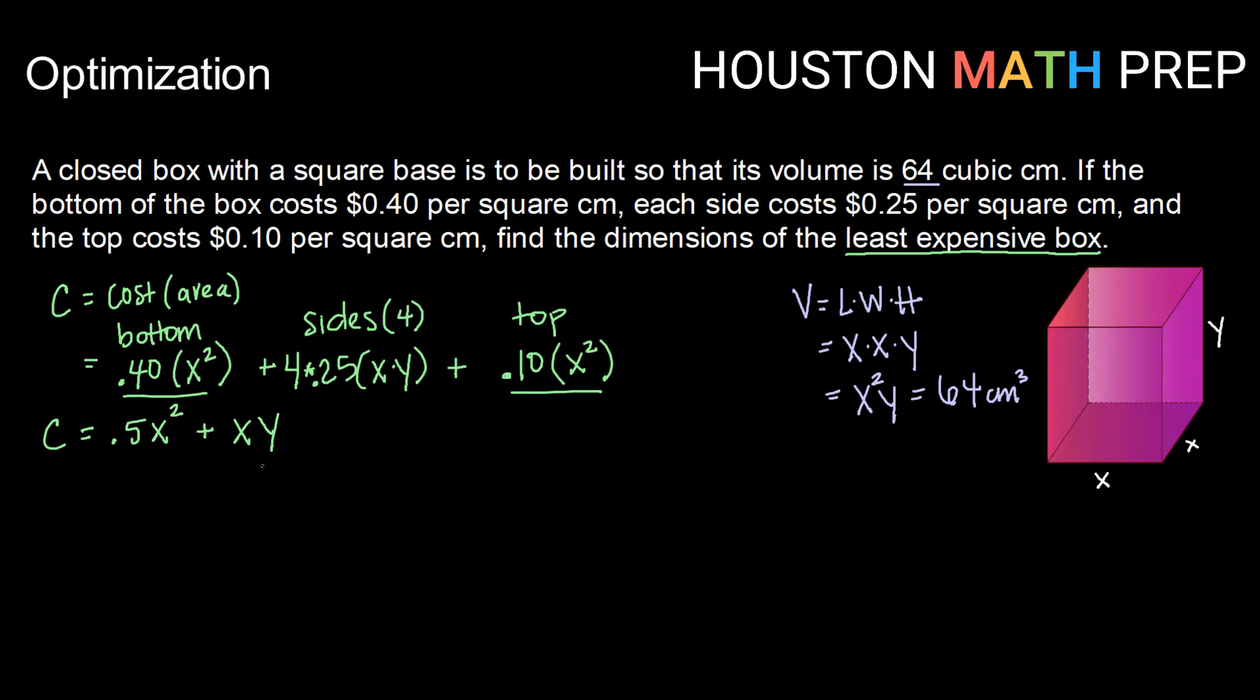So cost is what we're going to want to minimize. That means we're going to need to take our derivative and for that derivative we really would prefer that this be just in terms of one variable. So it's your choice which variable you want to get rid of, but since I only have one y I'd probably rather get rid of that. So coming over here to my constraint, my volume, if I were to solve that for y by dividing over my x squared, I would get that y is equal to 64 over x squared.